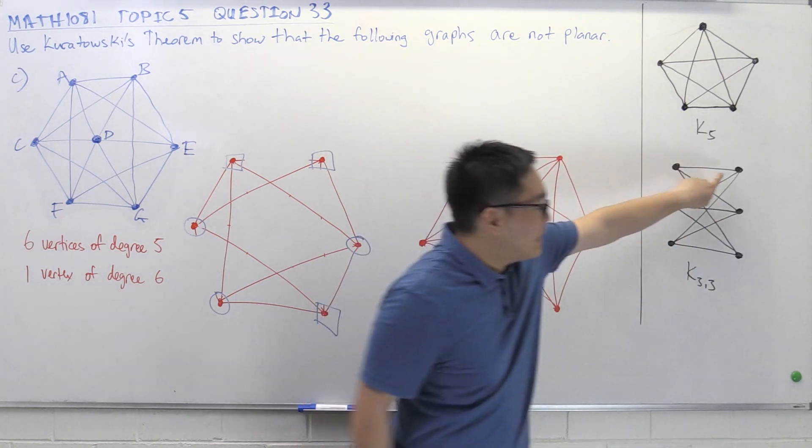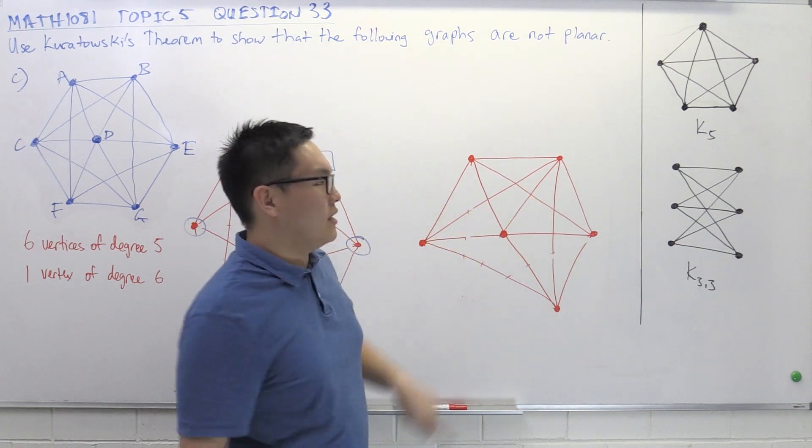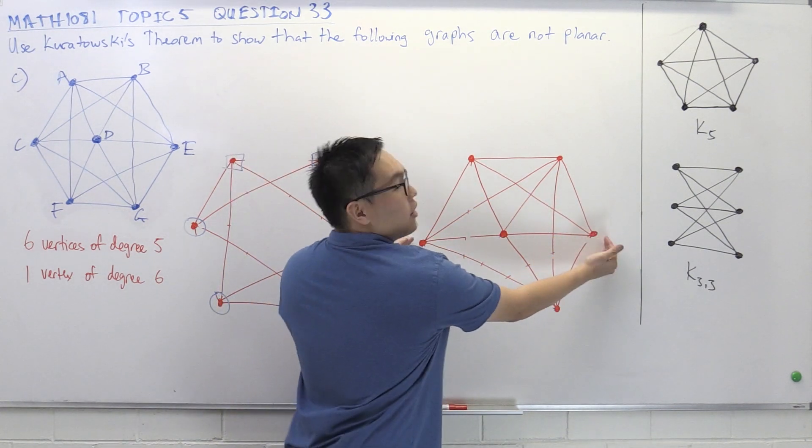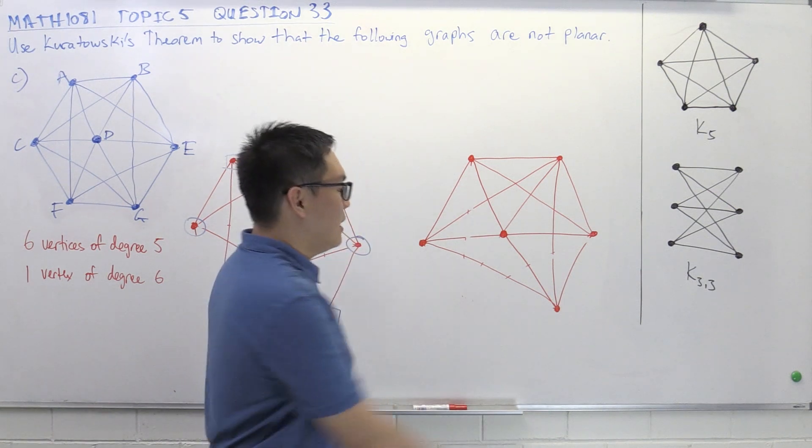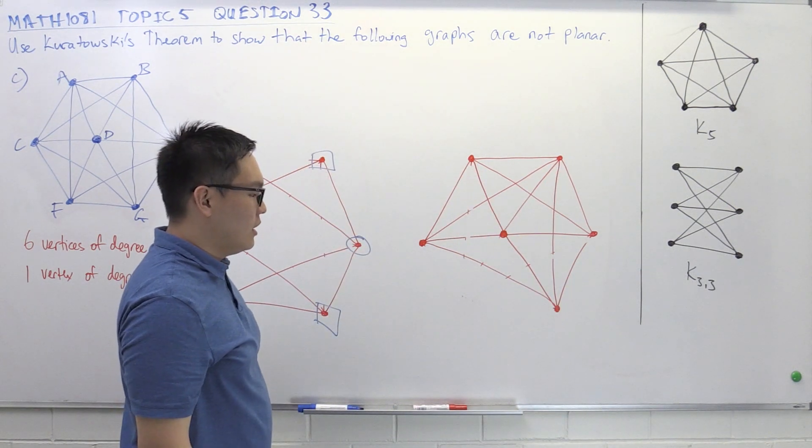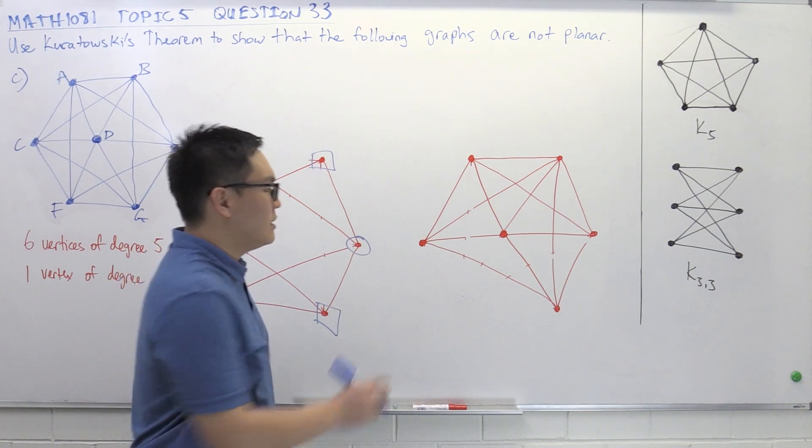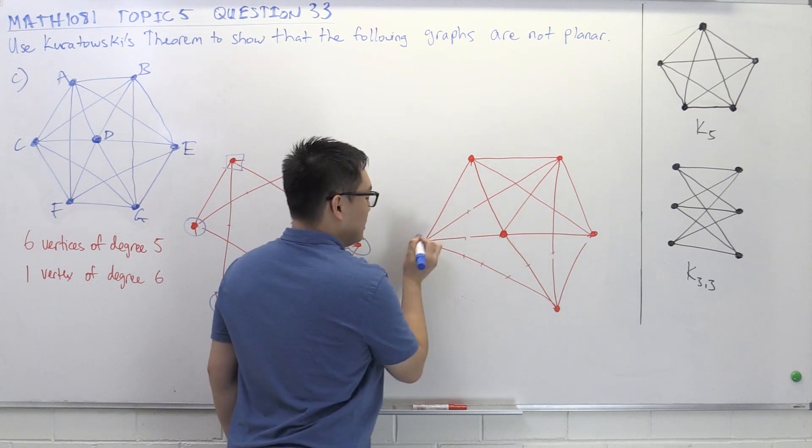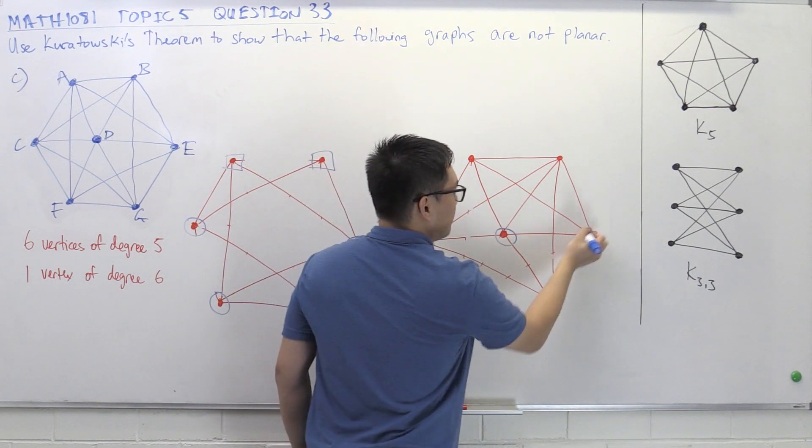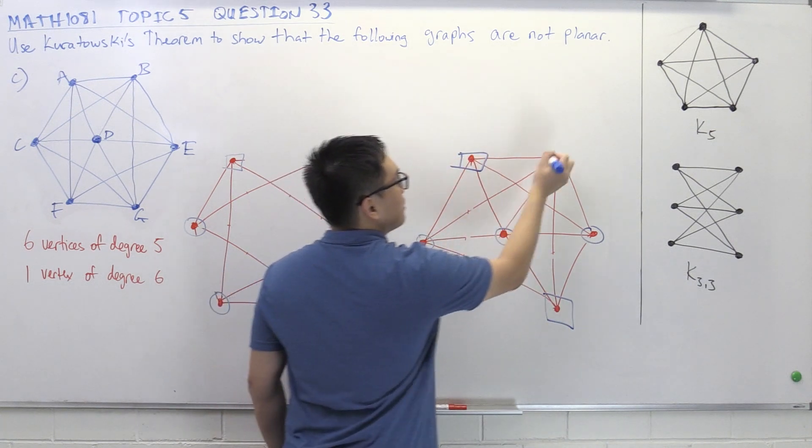If you think about it, if I take K33, and take that vertex, and pull it out to the other side, then it kind of looks like this. So this is one part of the vertices, and this is the other set of vertices. So let's go with that idea for a minute. Let's say this is one part. So these are the circles, and that leaves the other ones to be squares.